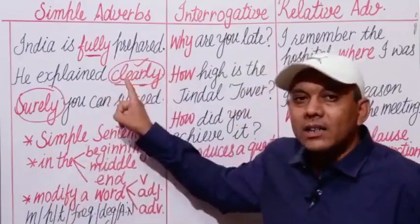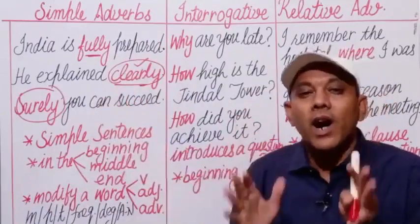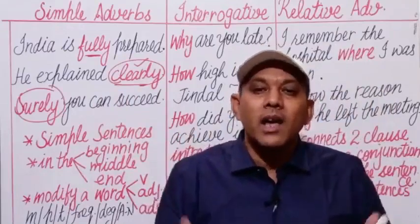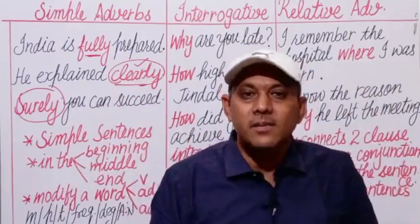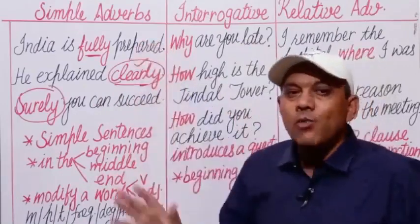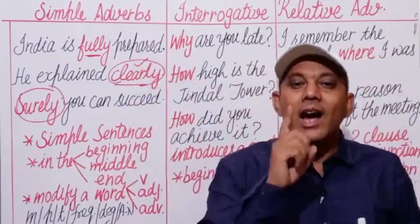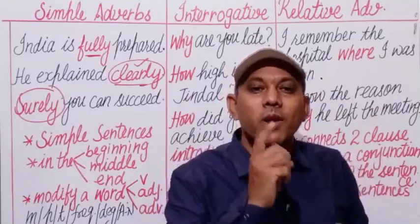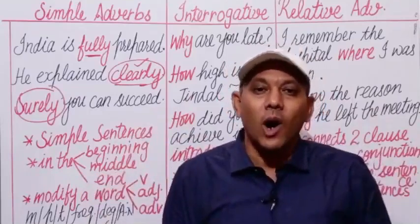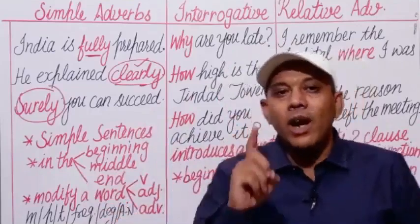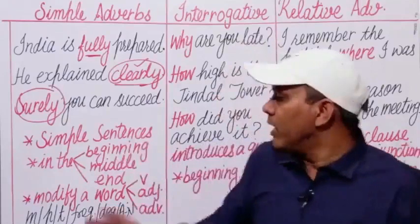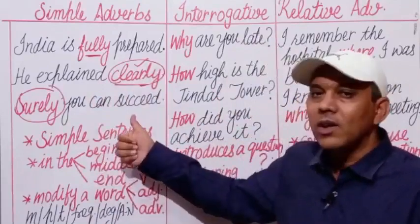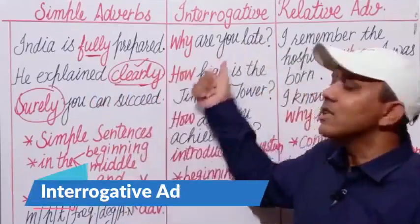A simple adverb can be used at the beginning, in the middle, or at the end of a sentence, but only in simple sentences. It modifies a word — a verb, an adjective, an adverb, a phrase, or the whole sentence. Simple adverbs are of many types: adverb of manner, adverb of place, adverb of time, adverb of degree, adverb of frequency, adverb of affirmation or negation. We shall discuss these types in detail later.